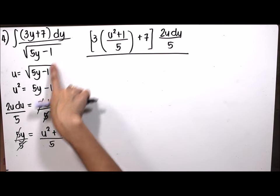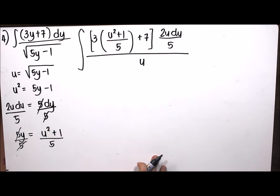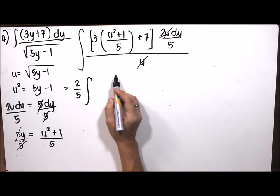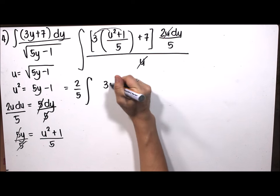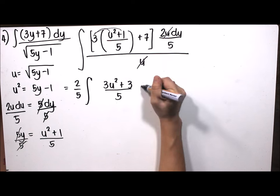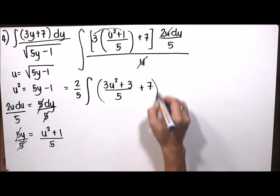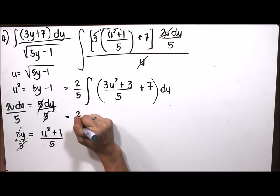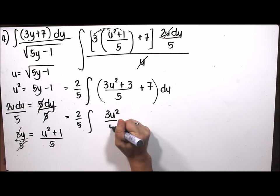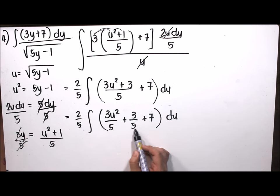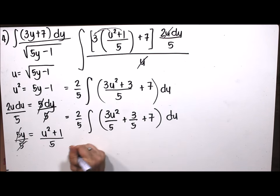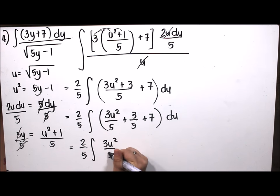After canceling u from numerator and denominator, we factor out 2/5. Distributing 3 into u squared plus 1 over 5, we get 3u squared over 5 plus 3 over 5. Adding 7 with the common denominator 5, we get 7 as 35 over 5, so 3 over 5 plus 35 over 5 equals 38 over 5. The integral becomes 2/5 times the integral of 3u squared over 5 plus 38 over 5, du.